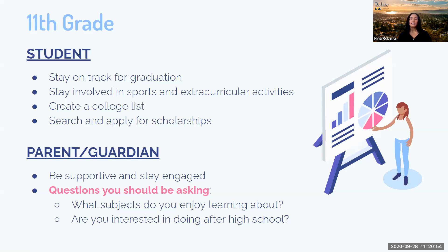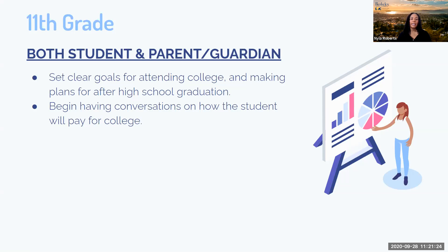For parents in 11th grade, stay supportive and engaged. Some major questions to ask your student: What subjects do you enjoy learning about? What are you interested in doing after high school? These can help students think about college, trade programs, or other paths after earning their diploma. For both students and parents, set clear goals for attending college and make plans for after high school graduation. It's very important to begin having conversations about how the student will pay for college — we don't want to wait until after acceptance to find out a school may not be affordable.